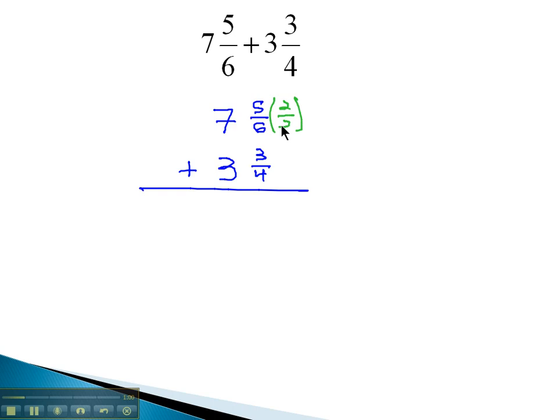So the 6 needs to be multiplied by 2 over 2, giving us 10 twelfths. And the 4 needs to be multiplied by 3 over 3, giving us 9 twelfths to be added together.